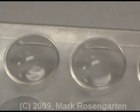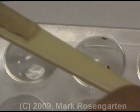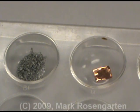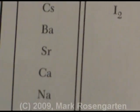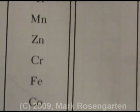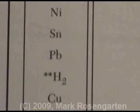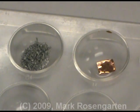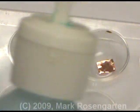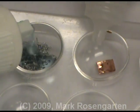This next reaction will test the relative reactivities of two metals. According to reference table J, zinc is listed higher than copper, which means that zinc should be able to replace copper in a compound, but copper will not be able to replace zinc in a compound. To test this, I'm going to put copper nitrate in with the zinc, and zinc nitrate in with the copper, and see which one has a reaction.